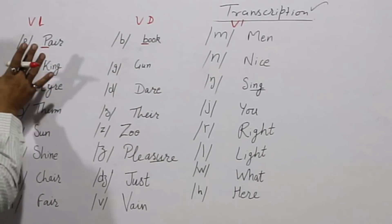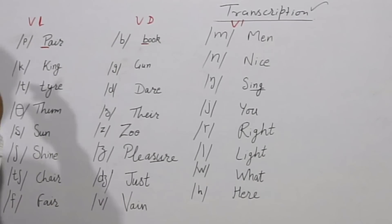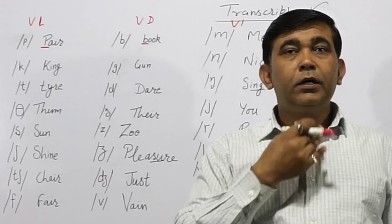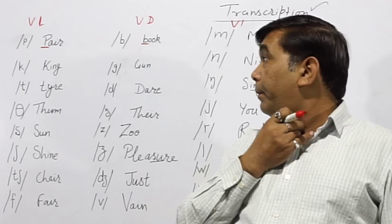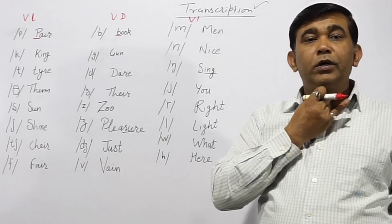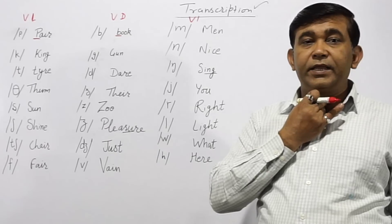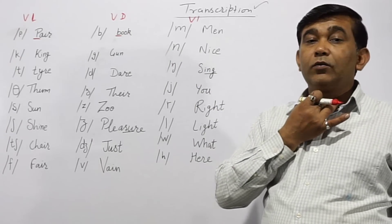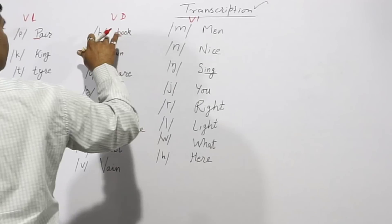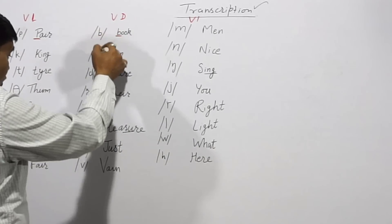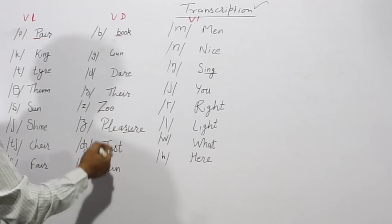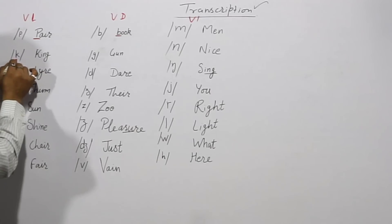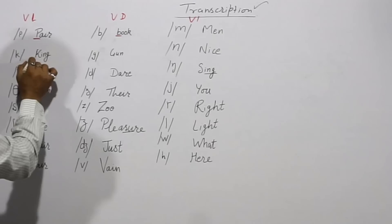Let me tell you one difference between voiced and voiceless. When we speak voiceless sounds like /p/, /p/, /p/, there is no vibration in our vocal cords. But when we speak /b/, first there will be vibration, and then we pronounce the sound. So /b/, /b/ — this vibration shows that the sound is voiced. All voiced sounds will give vibration in your vocal cords.